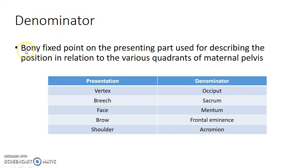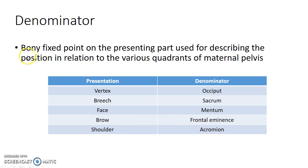Coming to denominator: it is a bony fixed point on the presenting part used for describing the position of the fetus in relation to the various quadrants of the maternal pelvis. Depending on the presentation there can be different denominators. For vertex presentation it is the occiput; for breech presentation it is the sacrum; for face presentation it is the mentum; for brow presentation it is the frontal eminence; and for shoulder presentation it is the acromion.